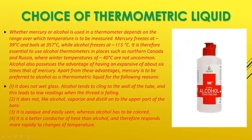This is the choice of thermometric liquid. Whether mercury or alcohol is used in a thermometer depends on the range over which the temperature is to be measured. Mercury freezes at minus 39 degrees Celsius and boils at 357 degrees Celsius, while alcohol freezes at around minus 115 degrees Celsius.